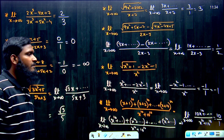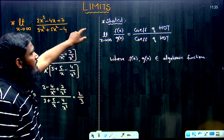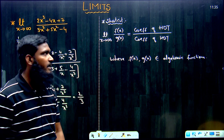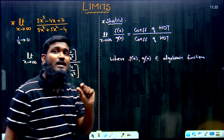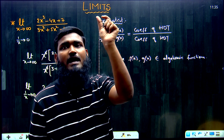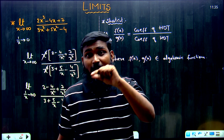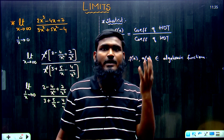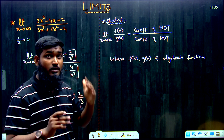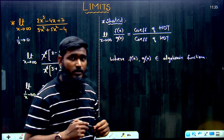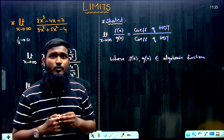To summarize the shortcut: limit x tends to infinity of f(x)/g(x) where both are algebraic functions — select the highest degree term from the complete question and take the coefficient of that highest degree term from the numerator divided by the coefficient of the same term from the denominator. If you enjoyed this video, please share it with your friends and in your WhatsApp group. Thank you.